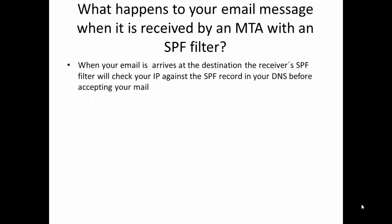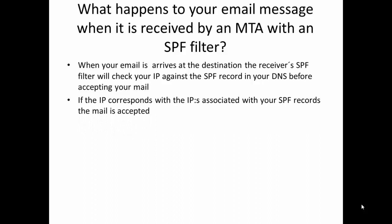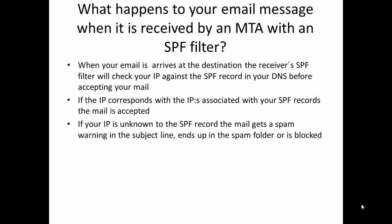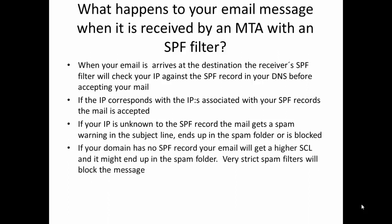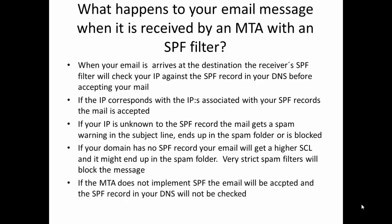What happens to your email message when it is received by an MTA with an SPF filter? When your email arrives at the destination, the receiver's SPF filter will check your IP against the SPF record in your DNS before accepting your email. If the IP address corresponds with the IP addresses associated with your SPF records, the mail is accepted. If your IP is unknown to the SPF record, the mail gets a spam warning in the subject line, can end up in the spam folder, or get blocked. If your domain has no SPF record, your email will get a higher spam confidence level and might end up in the spam folder — very strict spam filters will block the message. If the MTA does not implement SPF, the email will be accepted and the SPF record in your DNS will not be checked at all.